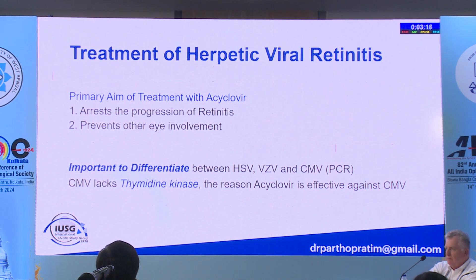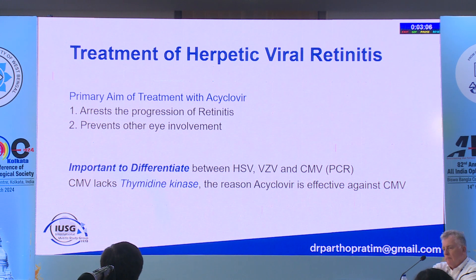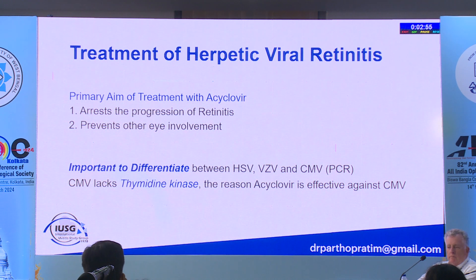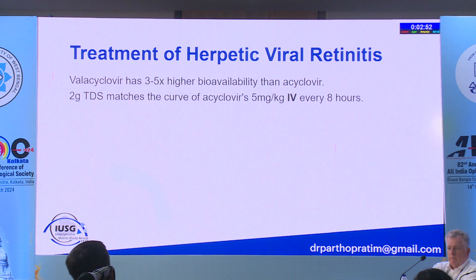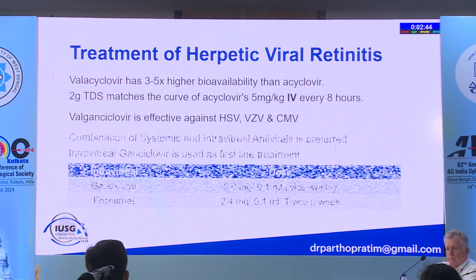For treatment of herpetic viral retinitis, the primary aim is to arrest progression and prevent fellow eye involvement. It is important to differentiate HSV, VZV, and CMV because CMV lacks thymidine kinase, so treating CMV with acyclovir will not work. Valacyclovir has higher bioavailability, as does valganciclovir compared to ganciclovir. Ideally, a combination of systemic and intravitreal antiviral treatment is preferred.